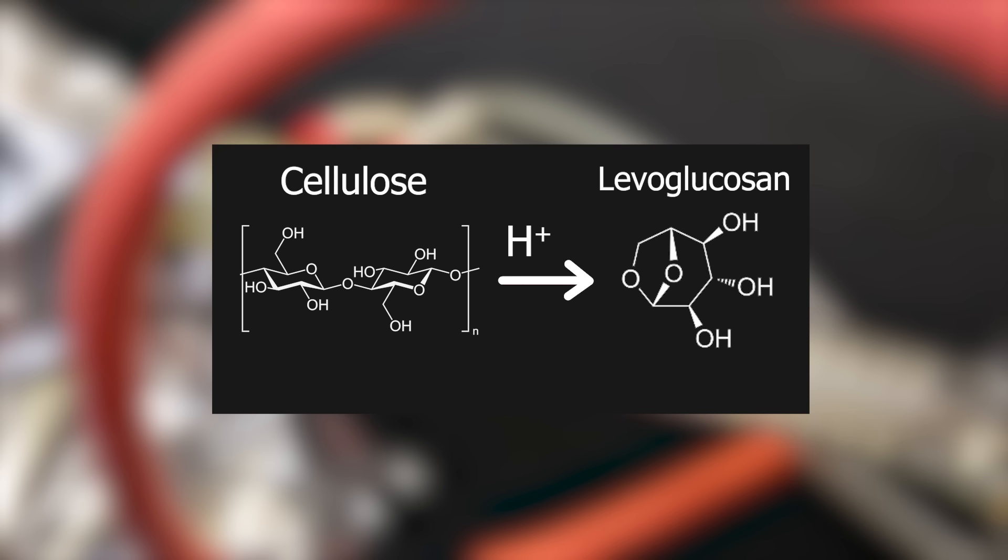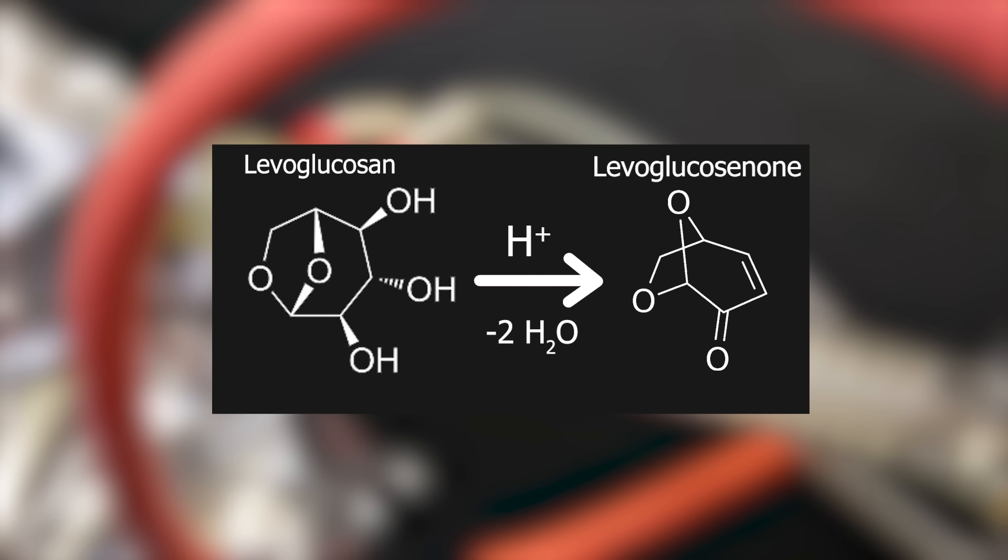What is happening is the acid-catalyzed pyrolysis of cellulose. With the help of heat and acid, the cellulose will first form levoglucosan, which quickly reacts to form levoglucosanone. Since the conditions are quite harsh, the cellulose chars and also forms side products like furfural.